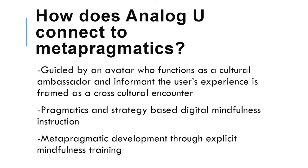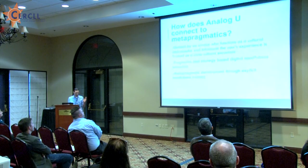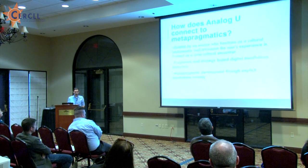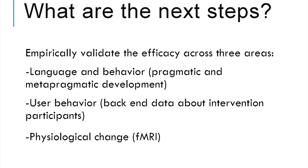To answer the fifth question — how does AnalogU connect to pragmatics? You're guided by an avatar who functions as a cultural ambassador and informant. The user's experience is framed as a cross-cultural encounter. It's also pragmatics and strategy-based digital mindfulness instruction. And then finally, we're hoping that this is pointing us towards meta-pragmatic development through explicit mindfulness training. We're pretty far out in verifying this, so empirical validation is certainly the next step — confirming that the theoretically informed decisions we made along the way are actually going to get at the heart of what we're aiming for.